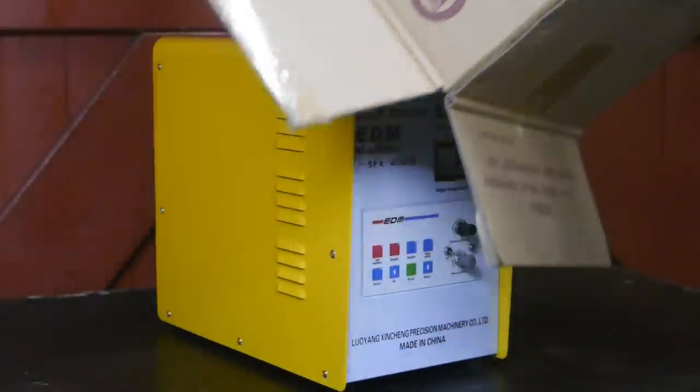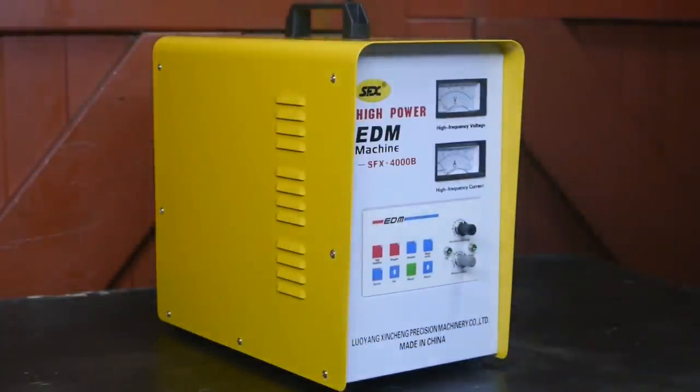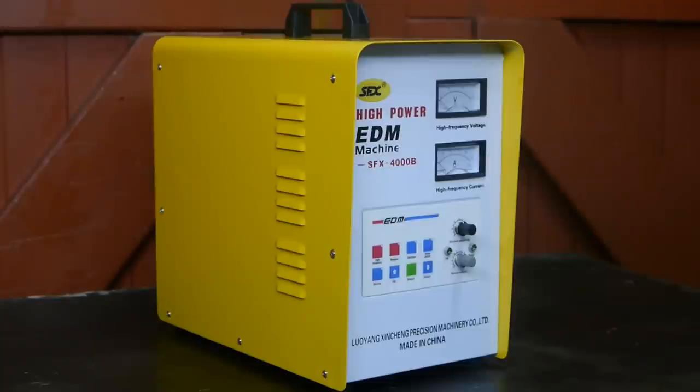So here it is, the SFX4000B high power broken tap remover, and it's actually their high-end model. The low power EDM 8C would be a better fit for my little channel, but hey, I'm not complaining. It's actually not completely free - a couple weeks after I received the machine, the Department of Revenue sent me an invoice. Apparently I owed them some VAT and import taxes.